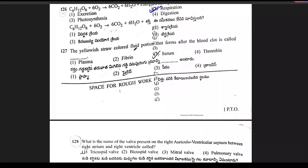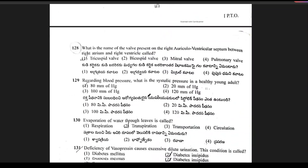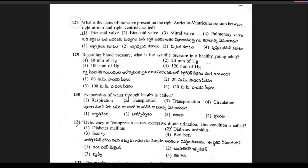The yellow straw-colored fluid portion that forms after the blood clots is called serum. Option 3 is the right answer.